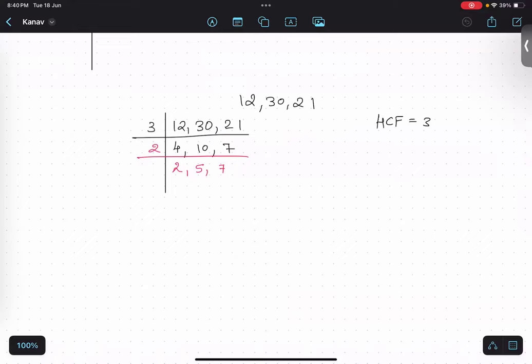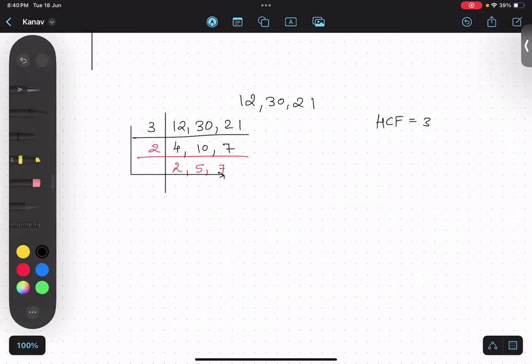So now LCM would be this thing. Multiplication. Yeah. So LCM is 3 multiplied by 2 multiplied by 2 multiplied by 5 multiplied by 7. So whatever is the answer, you can do 5 into 10, 0 will be there. So 7 into 3, 21. 21 into 2 is 42.